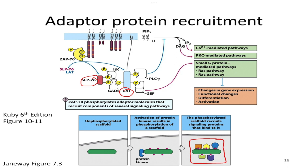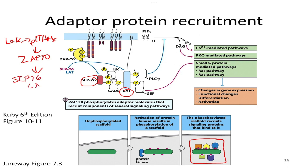Once we have signaling through LAT and SLP-76 — so we've had LCK phosphorylate the ITAMs, turned on ZAP-70, and turned on SLP-76 and LAT — signaling is going to branch in a few different directions. We'll go down each branch until we reach transcription, then come back to LAT and SLP-76 to go down the next branch.